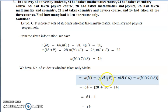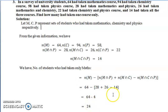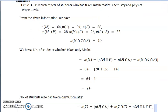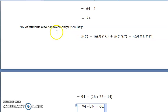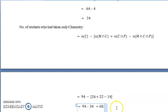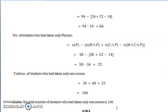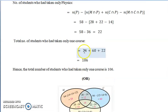To find students who took only mathematics: take n(M) and subtract all intersections involving M — that is n(M∩P), n(M∩C), and n(M∩C∩P). This gives 24, meaning 24 students took only mathematics. Similarly, the number of students who took only chemistry equals n(C) minus n(M∩C), plus n(C∩P), minus n(M∩C∩P). Replacing the respective values and simplifying gives 60.